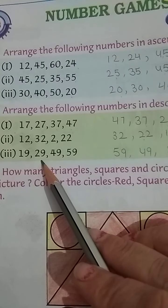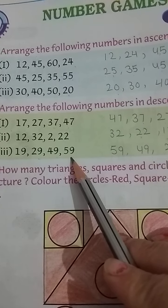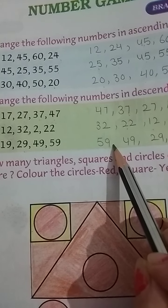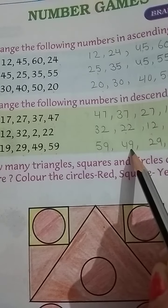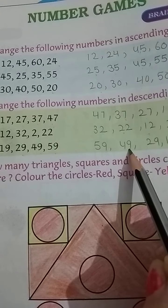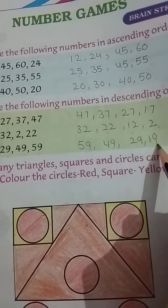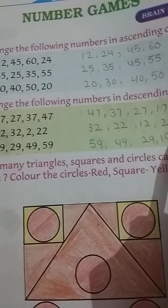Next. 19, 29, 49 and 59. Biggest number kaunsa hai? 59. Am kaunsa likhengi aaphe? 59. First, next. Smallest number 49, 29 and 19. Understand?